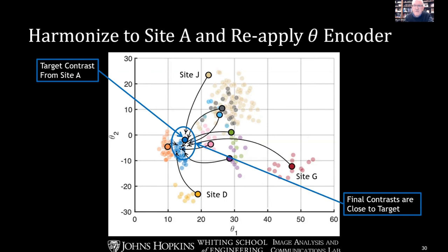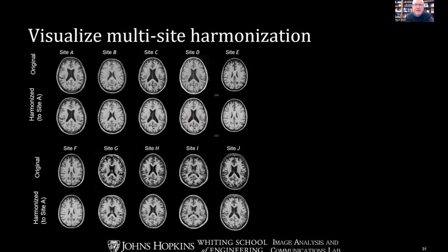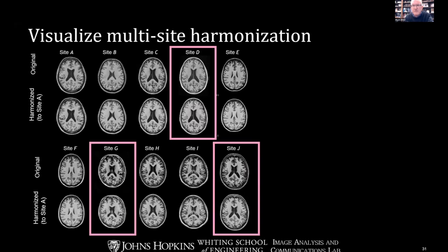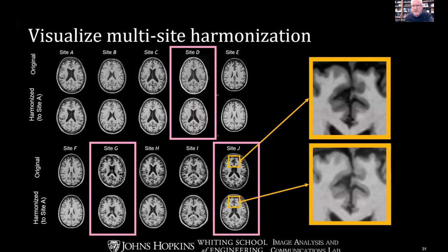Looking at qualitative results: sites J, D, and G move the farthest in contrast space and would be expected to look most different after harmonization. Displaying all 10 sites — rows one and three show original contrast for sites A through E and F through J respectively, with harmonized results in rows two and four. Rows two and four look fairly similar to one another. Zooming in on site J, you can see the contrast change between gray matter and white matter, and between gray matter and CSF — that's the whole purpose of harmonization.